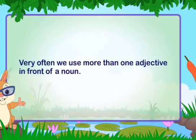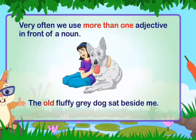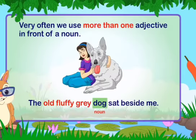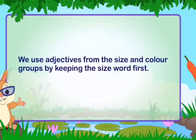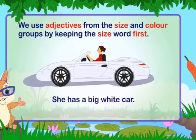Very often we use more than one adjective in front of a noun — for example, 'the old, fluffy, gray dog sat beside me.' When using adjectives from the size and color groups, keep the size word first — for example, 'she has a big white car.'